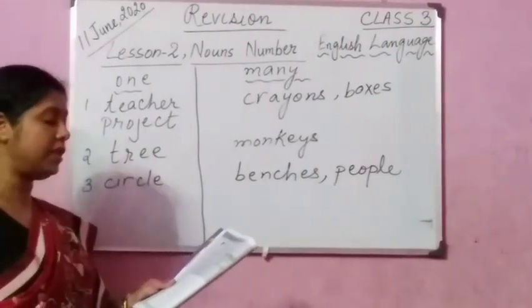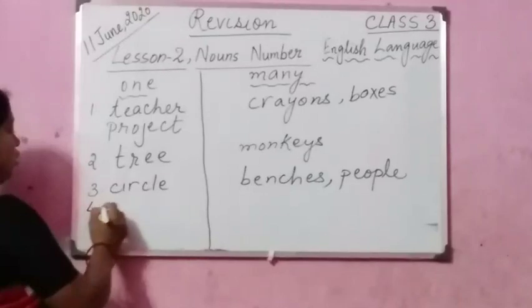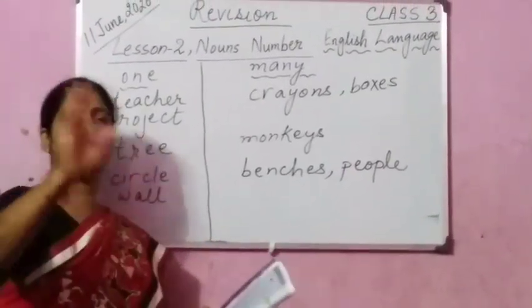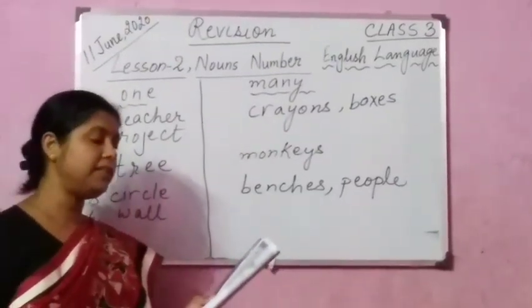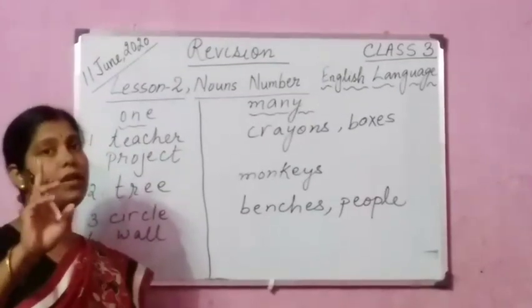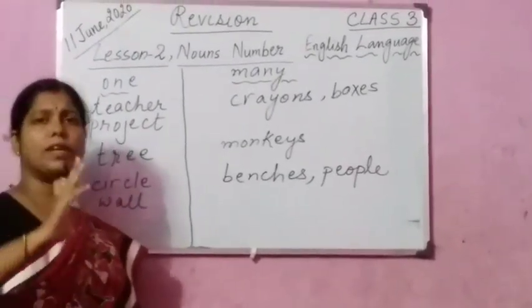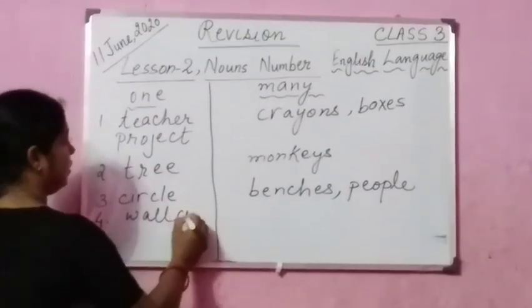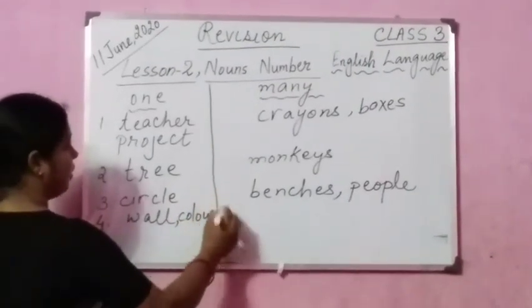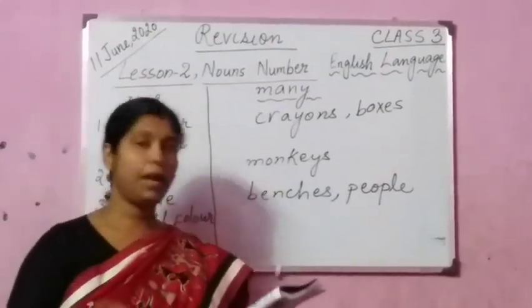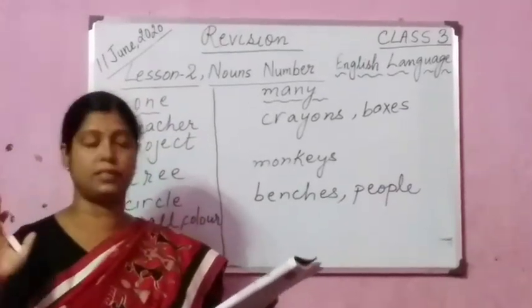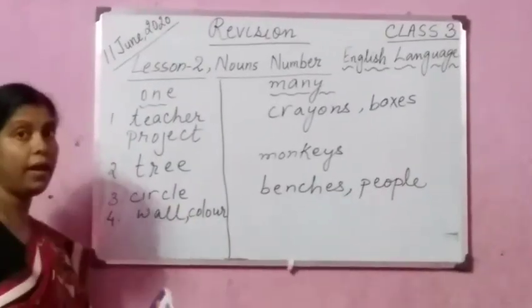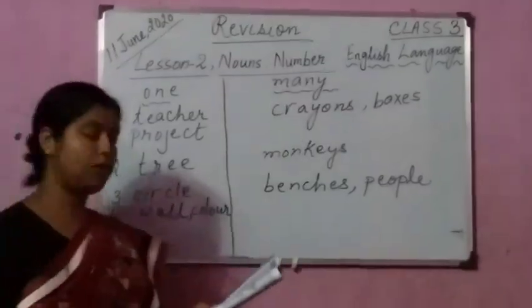Number 4: she painted the wall in a bright yellow color. One wall — we will consider it as one. She painted the wall in one single color. Color will also be singular, because the plural is always 'colors' — in a rainbow there are 7 colors. So wall and color will both fall under the singular category.